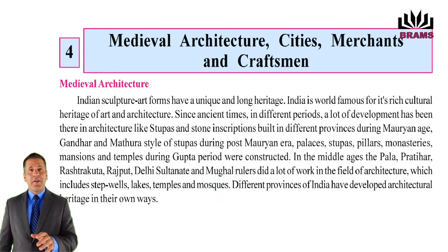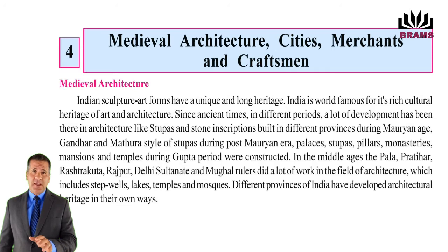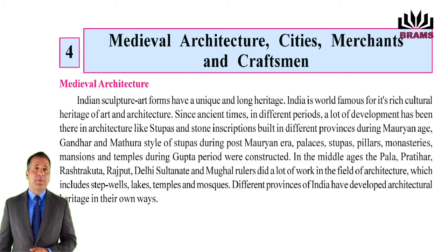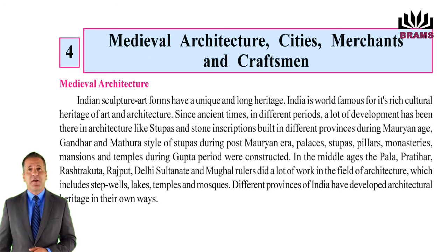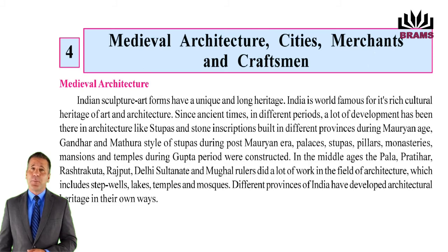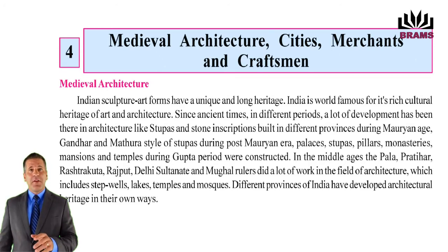Now let's begin: Medieval Architecture — Cities, Merchants and Craftsmen. Indian sculpture and art forms have a unique and long heritage. India is world famous for its rich cultural heritage of art and architecture. Since ancient times, in different periods, a lot of development has been there in architecture — like stupas and stone inscriptions built in different provinces during the Mauryan age, Gandhar and Mathura styles of stupas during the post-Mauryan era, and palaces, stupas, pillars, monasteries, mansions and temples during the Gupta period. In the Middle Ages, the Pala, Pratihar, Rashtrakuta, Rajput, Delhi Sultanate and Mughal rulers did a lot of work in the field of architecture, which includes step wells, lakes, temples and mosques. Different provinces of India have developed their architectural heritage in their own ways.